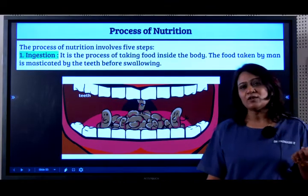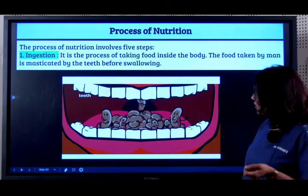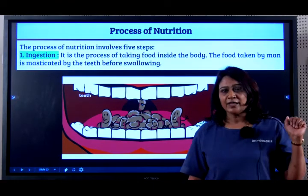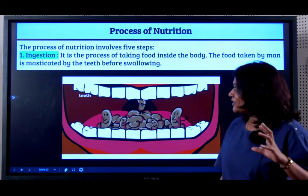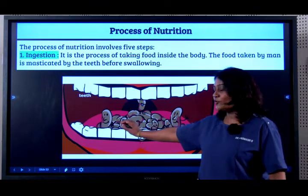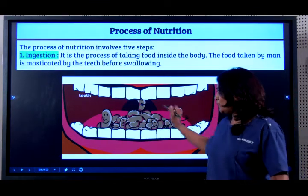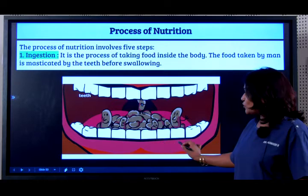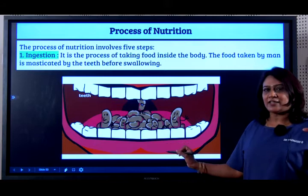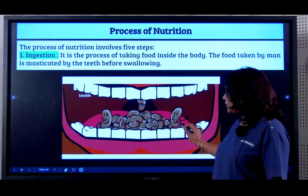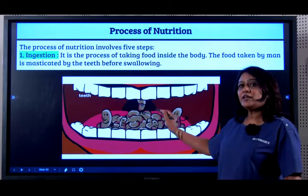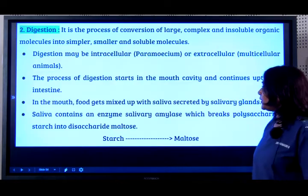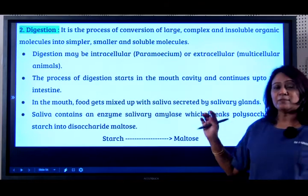Now coming to the process of digestion. So what happens when you eat food — let's say you've eaten a chicken burger. So these are the food particles of the chicken burger inside your mouth. You have the teeth which are going to chew on it, and this process is called mastication. As you chew on it, since a burger is a little dry, it has to become moist, so you have the salivary juice which makes it moist and breaks it down into something much softer.